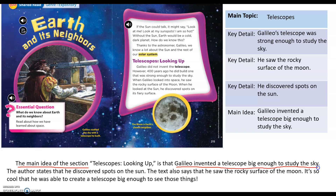Now let's read about the key details. 'The author states that he discovered spots on the sun. The text also says that he saw the rocky surface of the moon.' So I had two pieces of text evidence. All of this information is coming straight from my notes — I didn't even have to reread the text. I wrapped up my writing by restating the topic sentence: 'It's so cool that he was able to create a telescope big enough to see those things.'